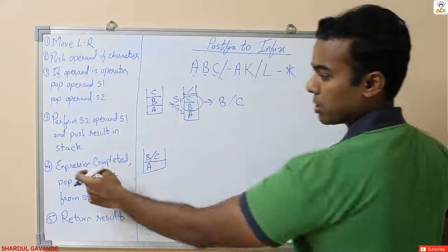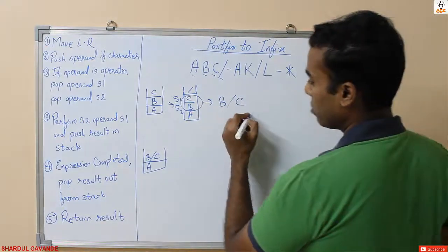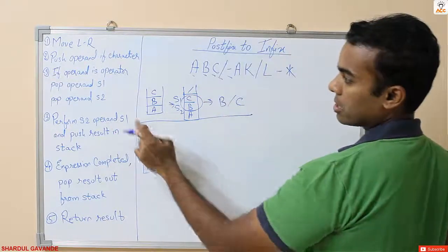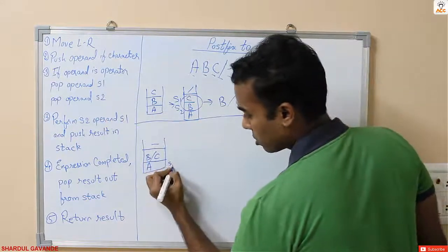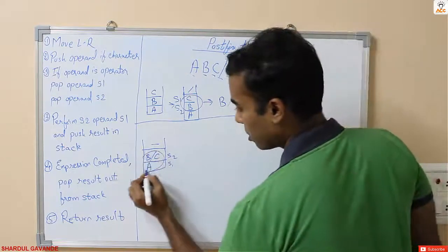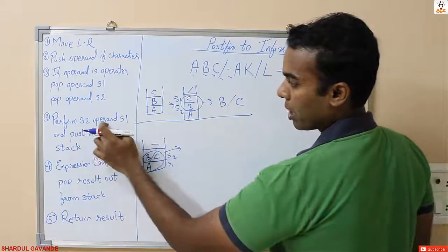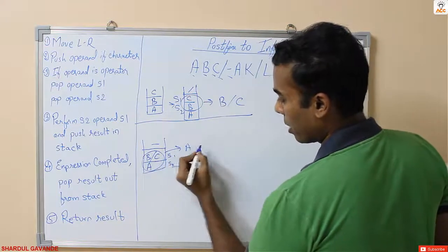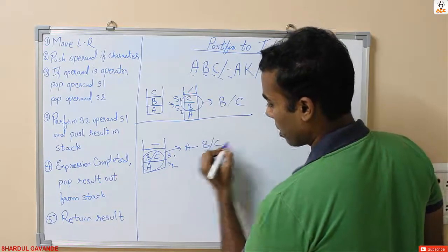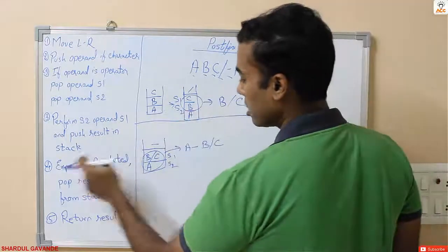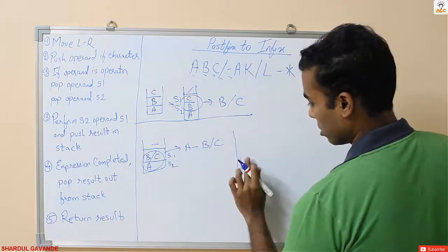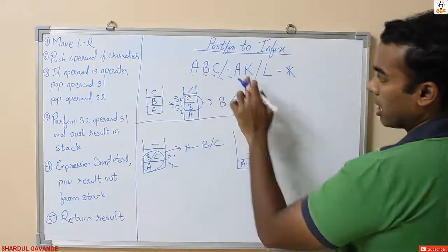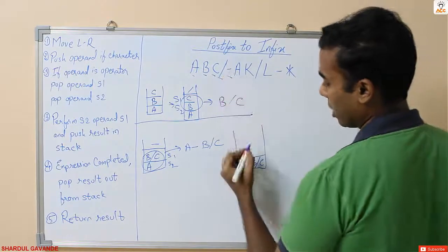The expression is not yet complete so we continue. Next we have a minus operator. Following the algorithm — it is an operator — we again pop s1 and s2. s1 is 'b/c' and s2 is 'a'. We perform s2 operand s1, giving us 'a minus b divided by c'. We push this result back into the stack.